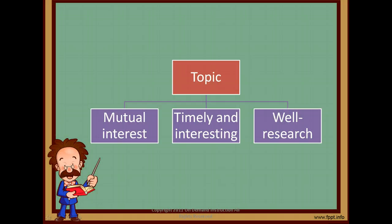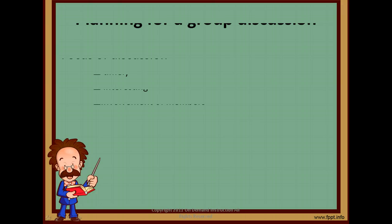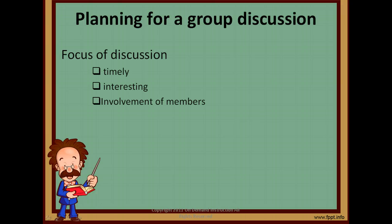There are factors affecting the success of a group discussion. A topic must be one that interests everyone in the group. Also, it should be timely and interesting. Lastly, it should be well-researched by every member of the group. Always remember that a group discussion's focus is on the topic that is timely, interesting, and one the members are involved with and prepared to discuss.